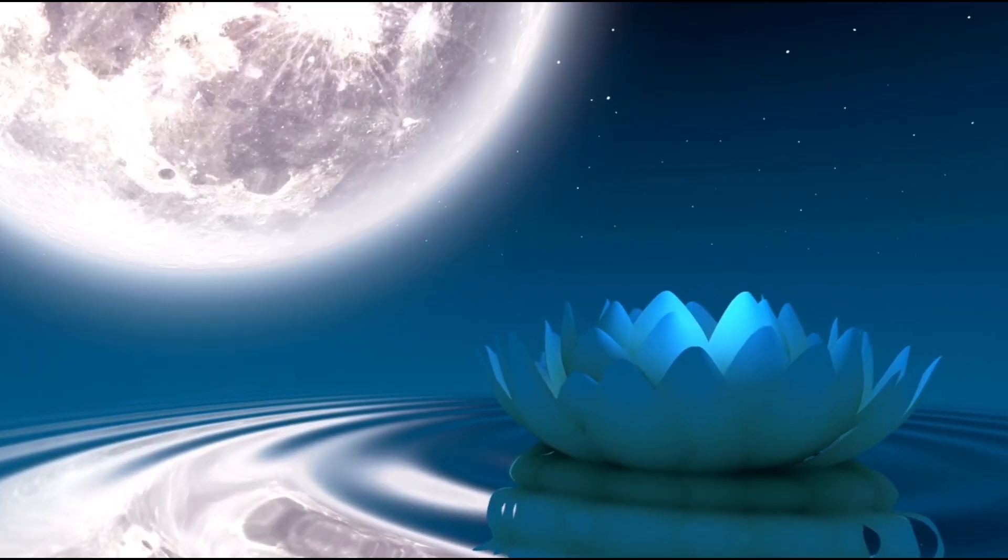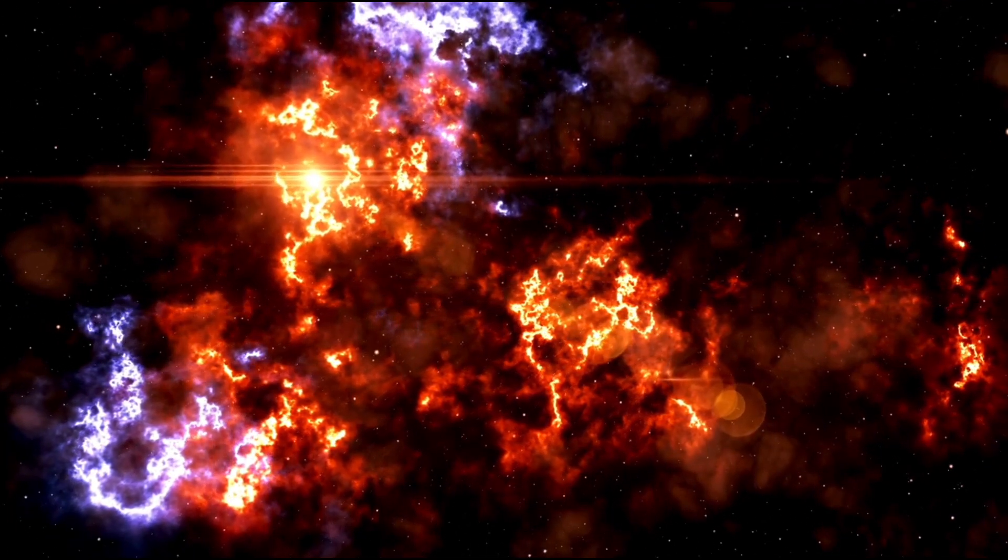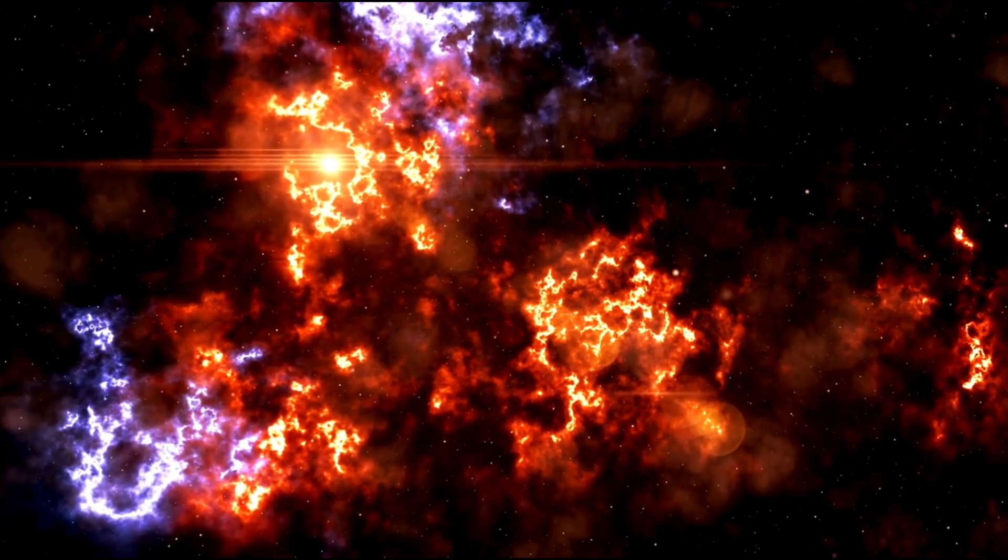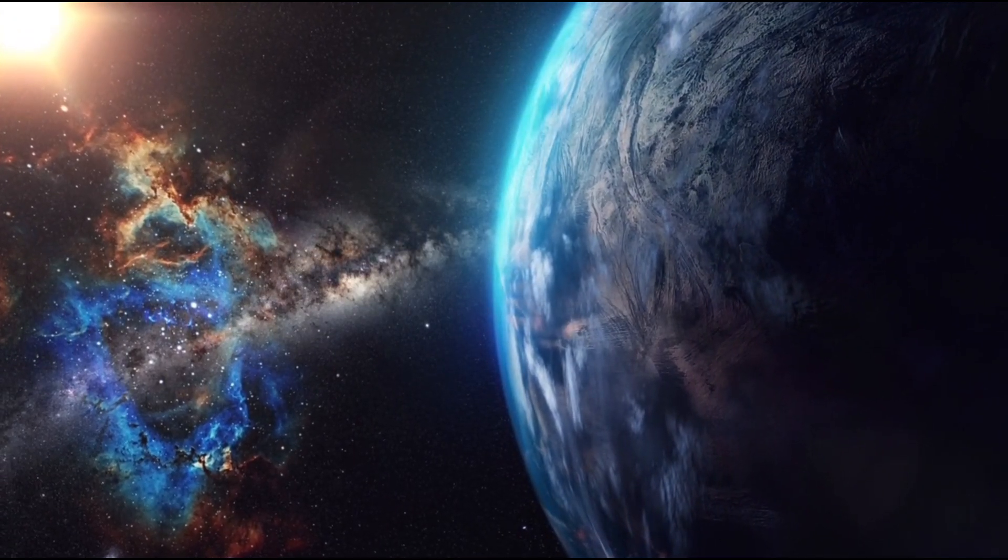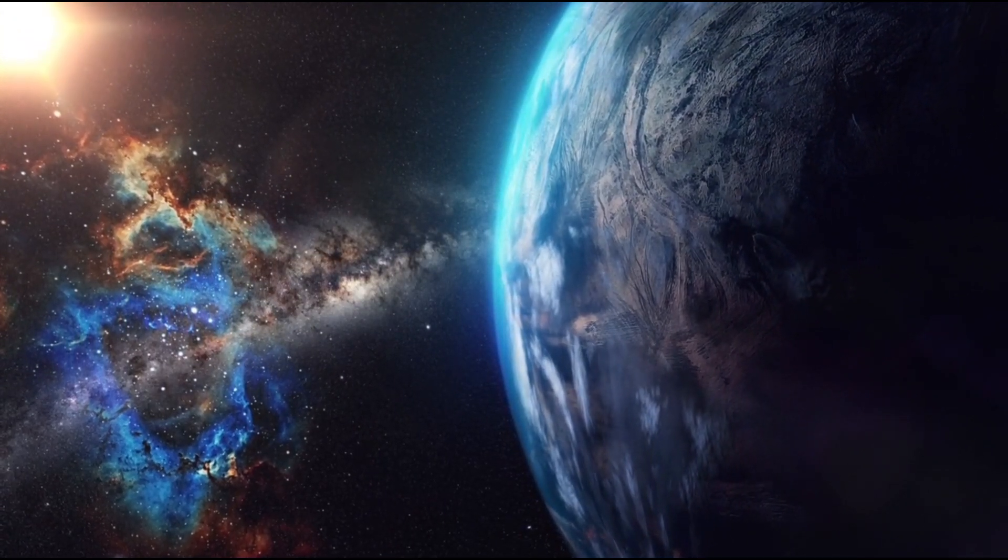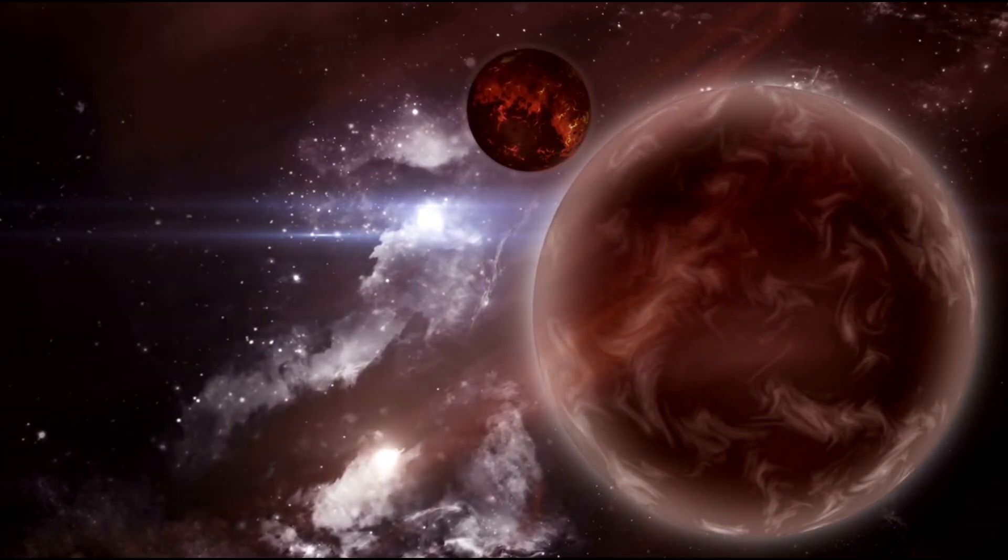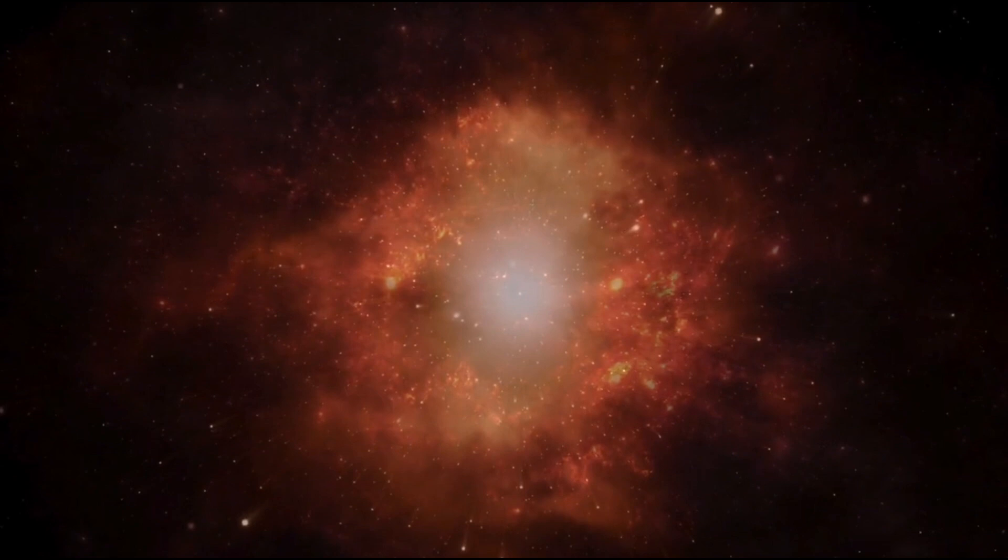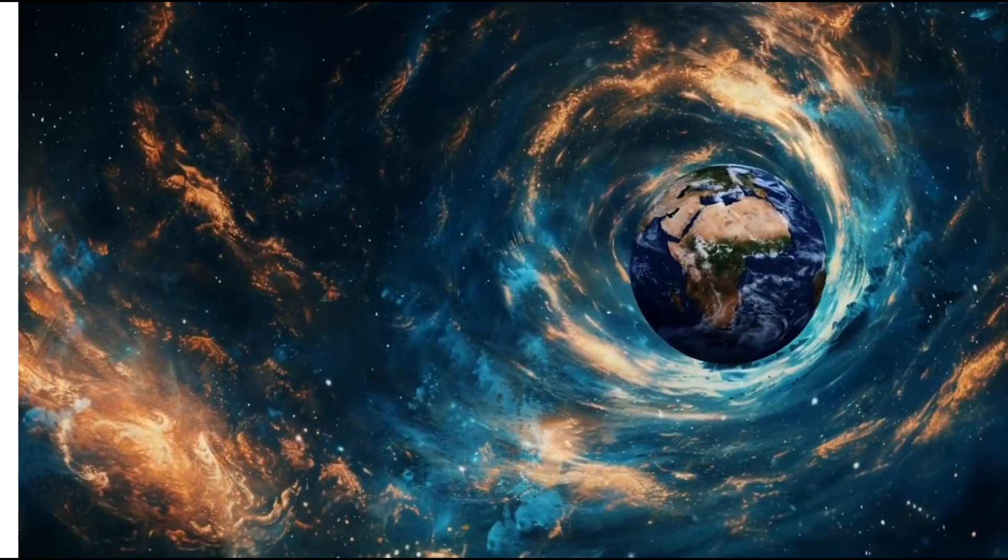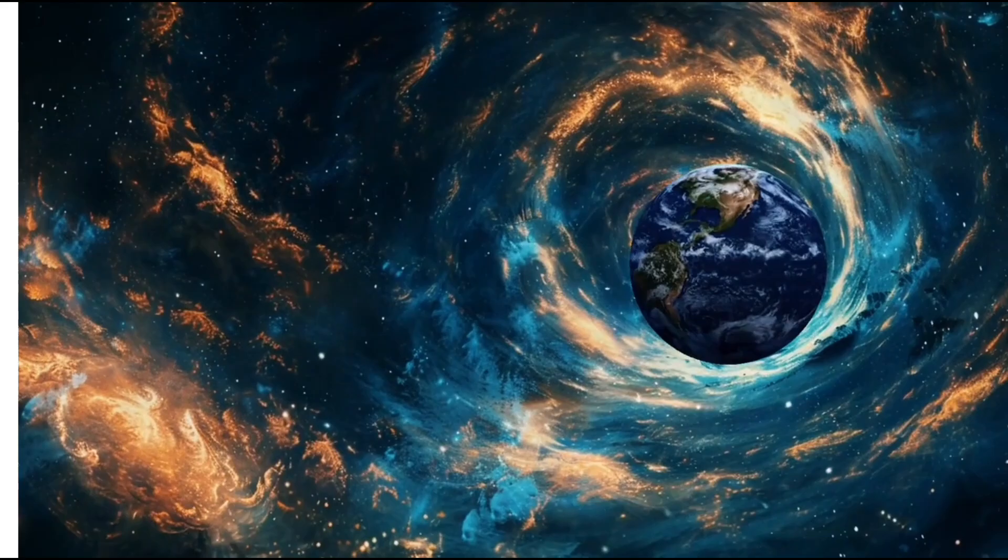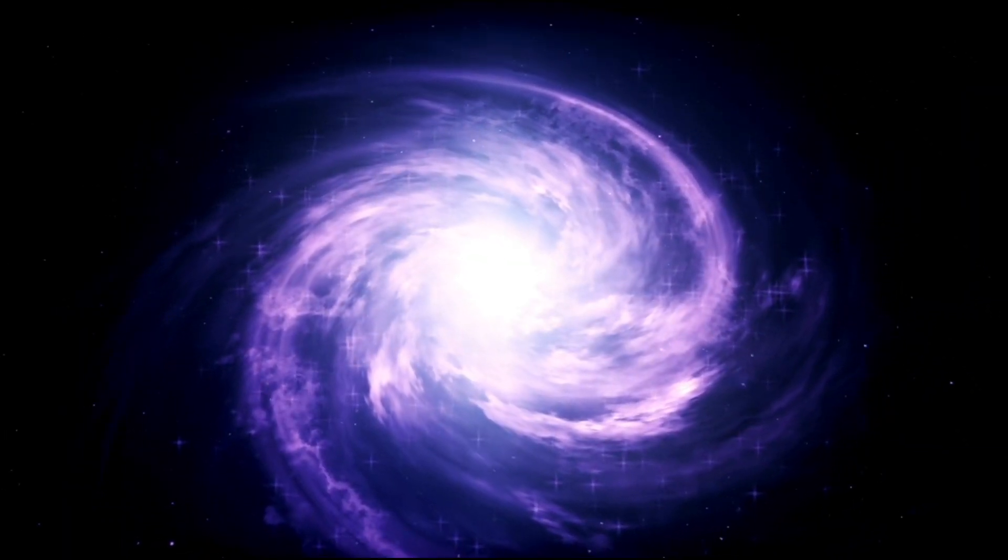Supernovae, though spectacular, are much less powerful than gamma-ray bursts, which are on an entirely different scale. While supernovae have the potential to obliterate biospheres and blanket planets in deadly radiation, it is their ability to strip away a planet's ozone layer that is particularly troubling. A weakened or destroyed ozone layer exposes the planet to harmful ultraviolet radiation, which could result in an extinction event.